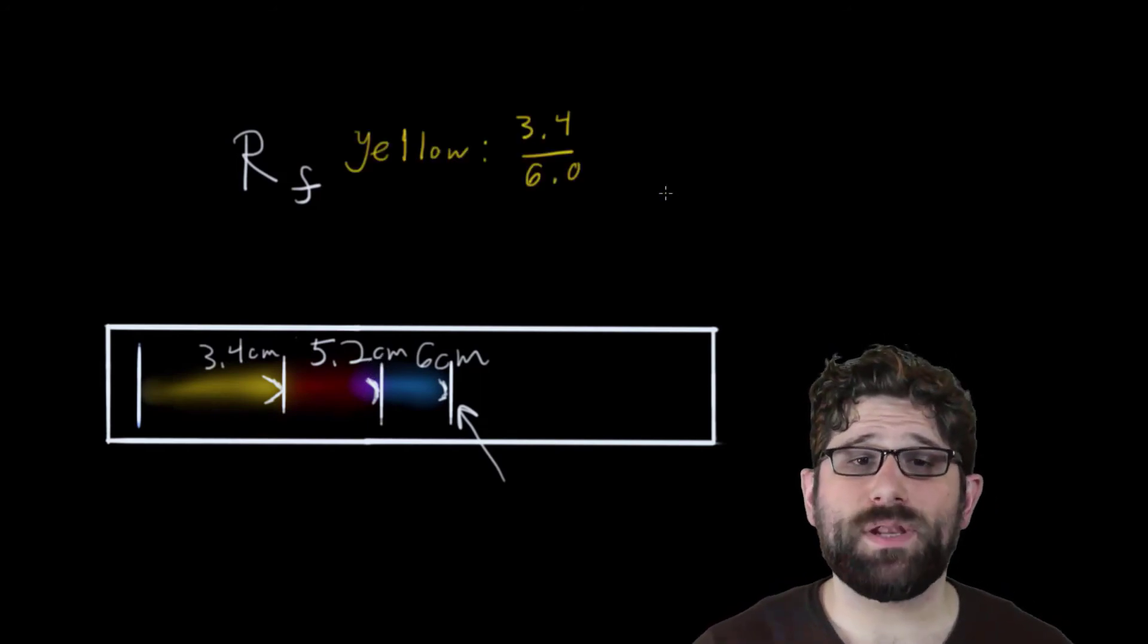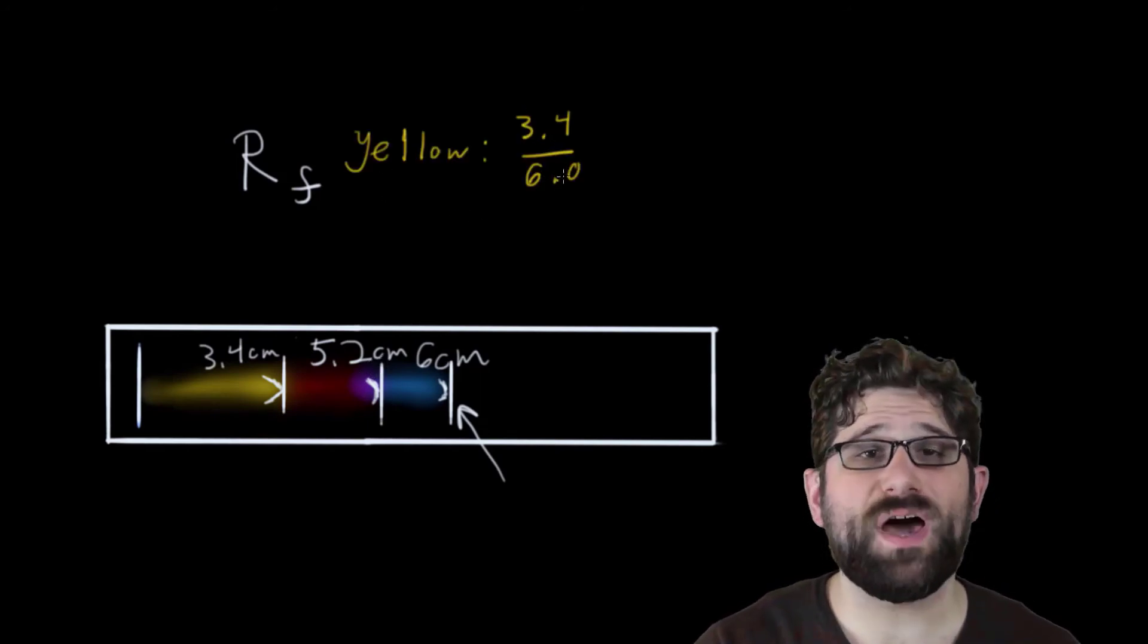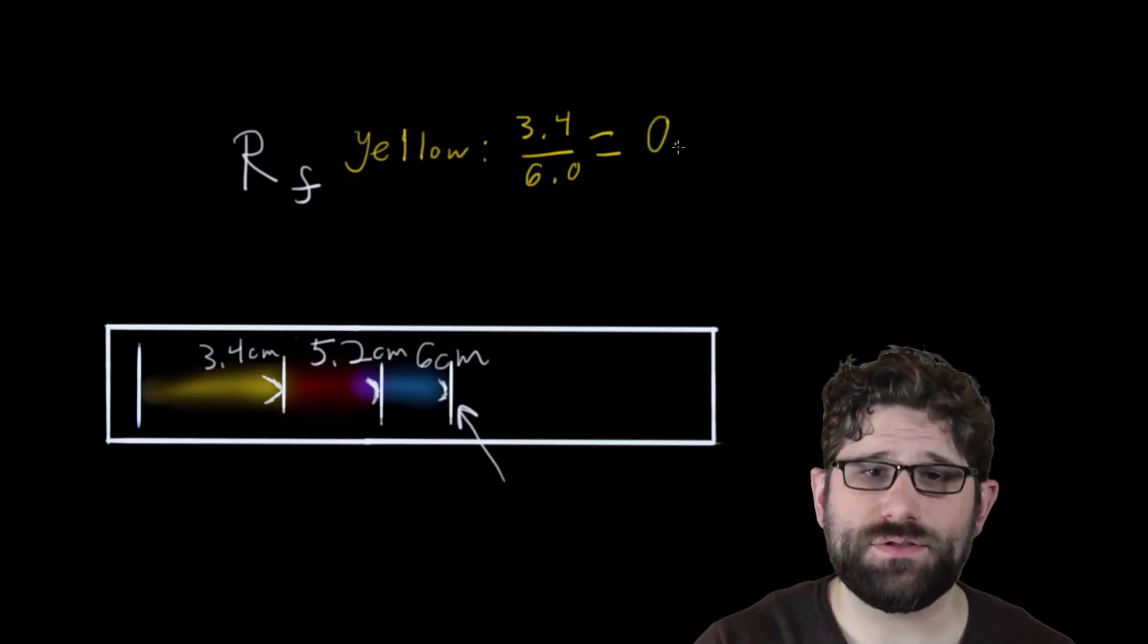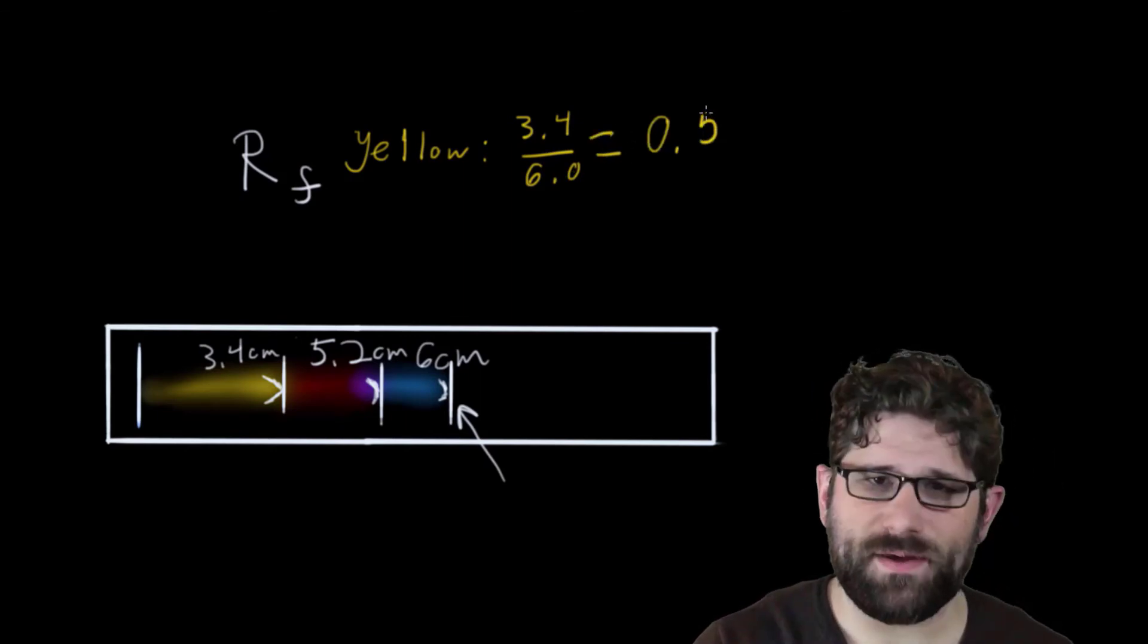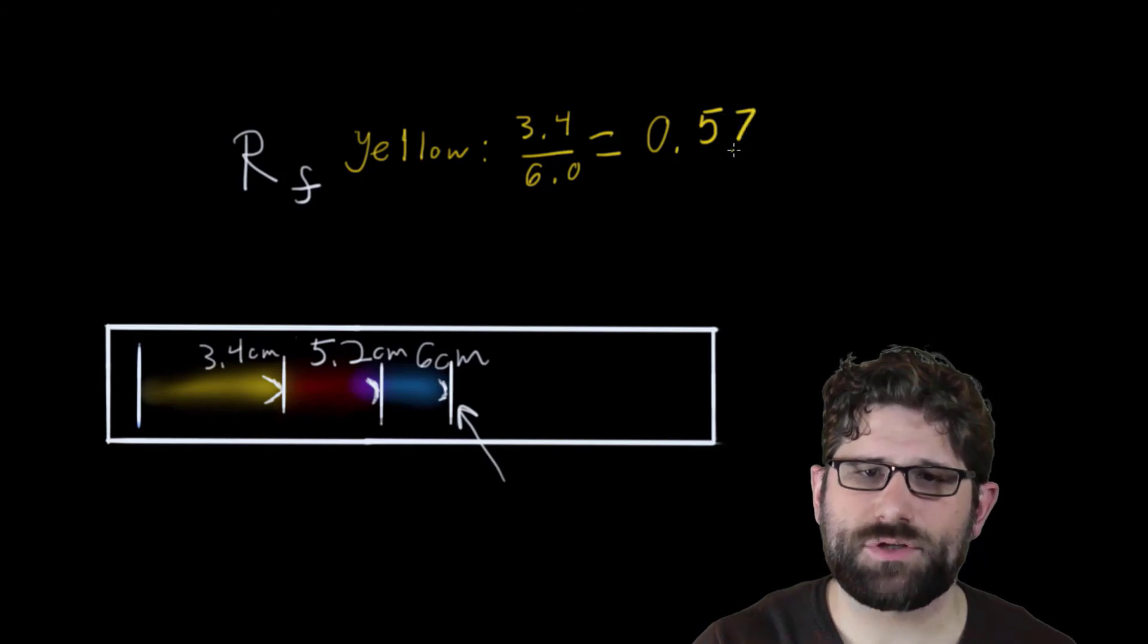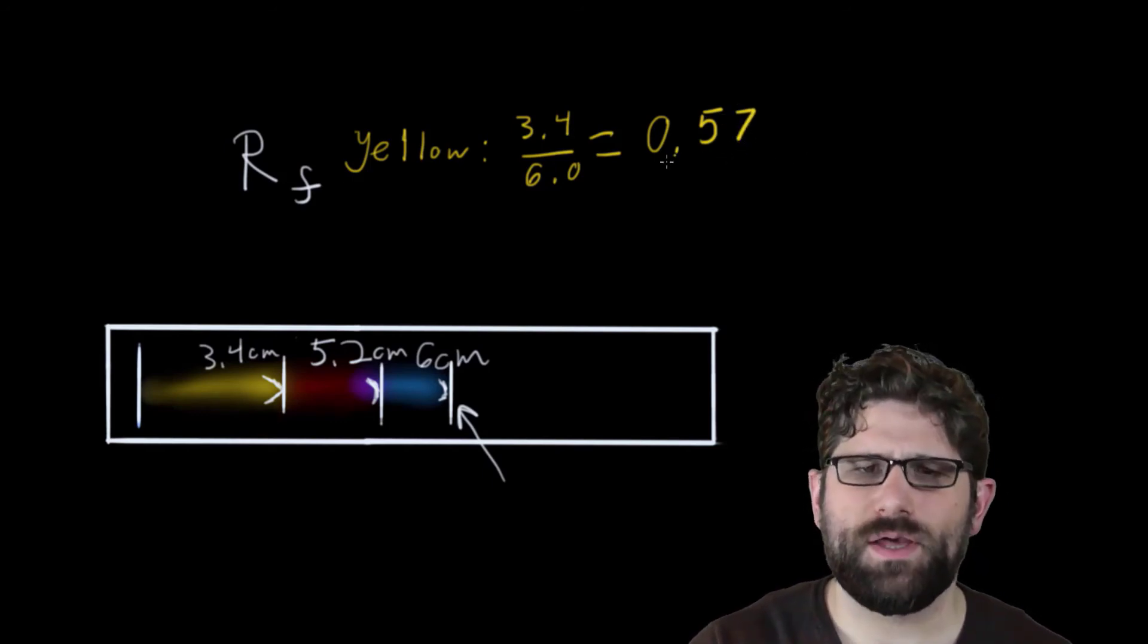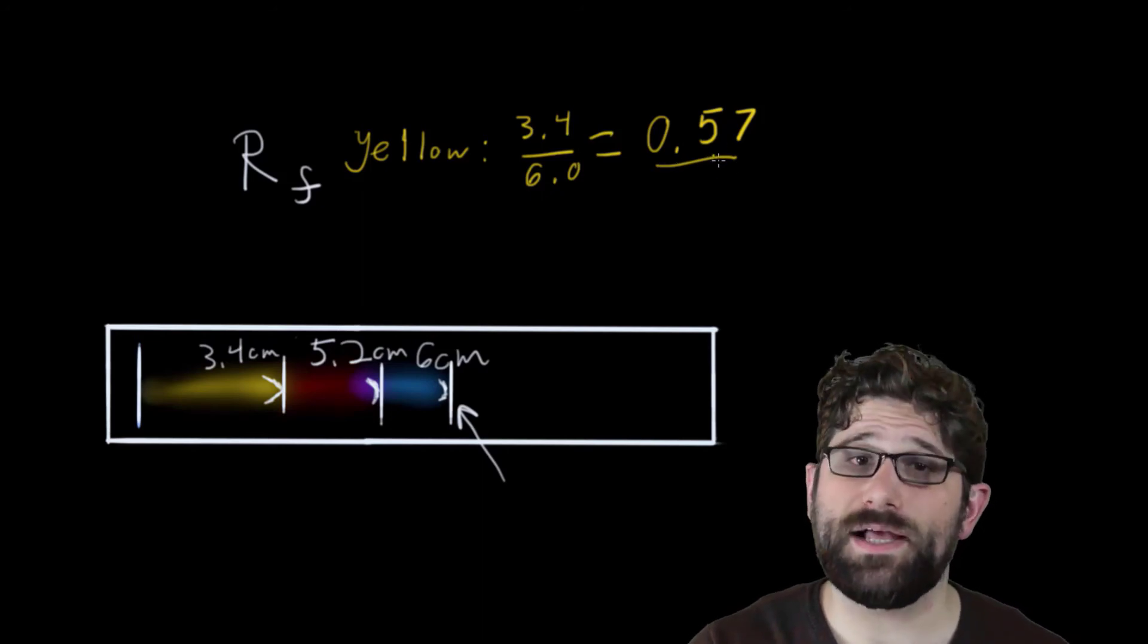So for my yellow pigment, I take that 3.4 divided by 6.0, and that's going to give me 0.57. I'm just going to round this to two decimal places. That'll be close enough. And so that's my RF value for that yellow pigment. I could use that to identify that pigment in various circumstances.